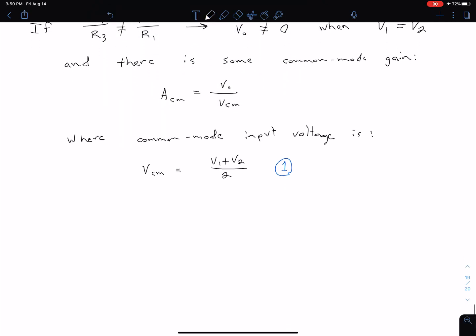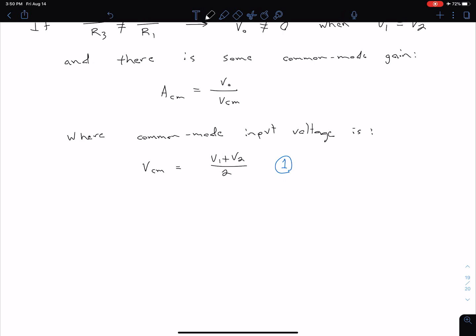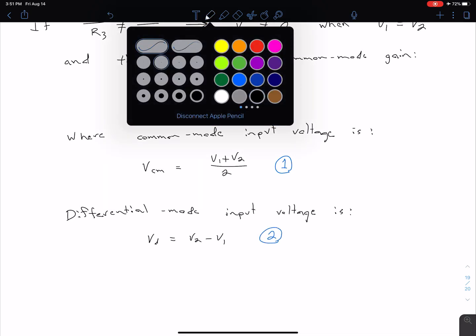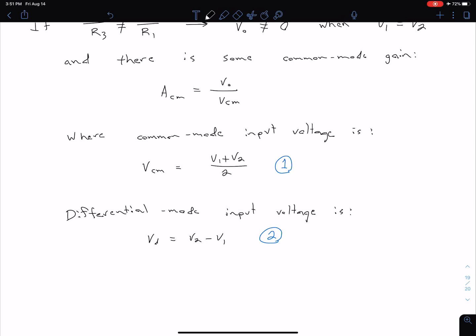We can also define a differential input mode voltage. We haven't defined it up to this point but it's going to be useful for our definition of our common mode rejection ratio. Our differential mode input voltage is just going to be the difference of our two input voltages, V sub d for differential equals V2 minus V1. Let's call this equation 2.